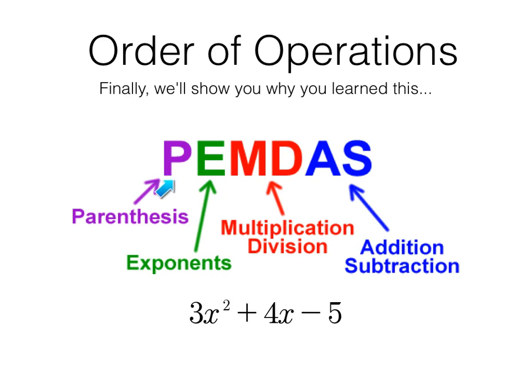You know you start with parentheses or grouping symbols. We don't see any in this particular example. But you do start with that. Then you apply exponents. Then multiplication and division as it comes from left to right, which is why they're both red. And addition and subtraction as they come from left to right. That's why, or this right here, is why we learned that. Now look what you have: 3x² + 4x - 5.